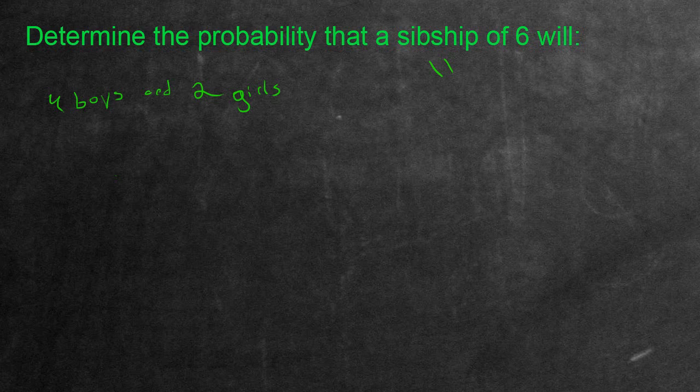Now the easiest way to answer this problem is actually going to be to use something called binomial expansion. Essentially, this is the formula for it. It's n to the factorial, so n means the total number of events. So in our case, that's going to be a six, but I'll input that a bit later.